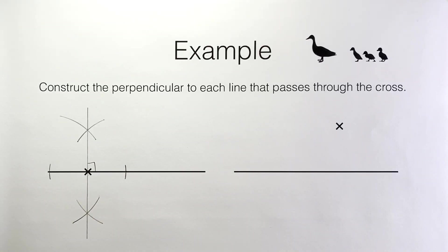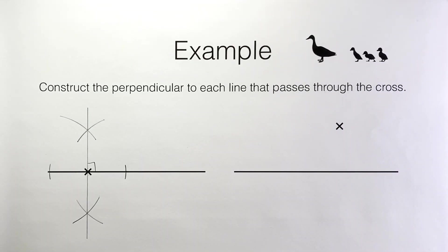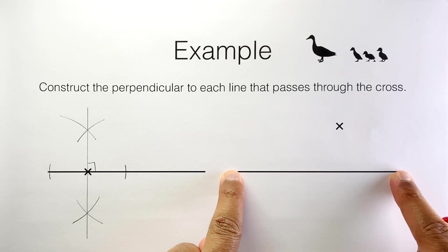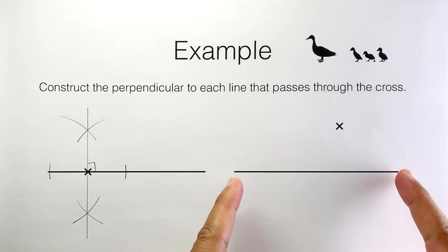In the second example we need to construct the perpendicular to this line segment that goes through this point here. Now the perpendicular line we get won't bisect this line segment. It won't split it into two equal halves. You can see that it's a bit closer to the right-hand side of this particular line segment. So what are we going to do?